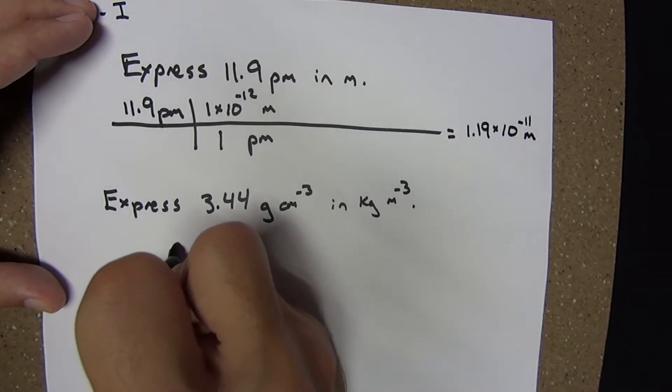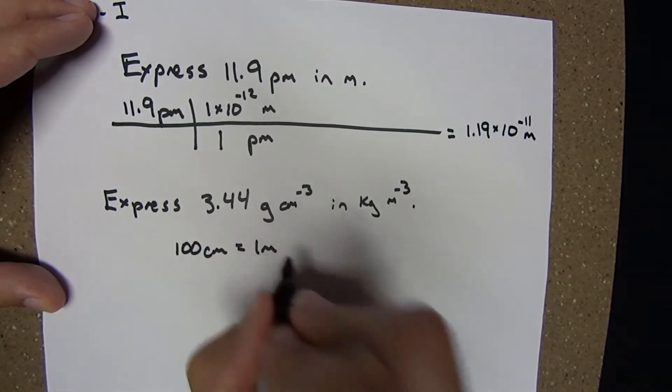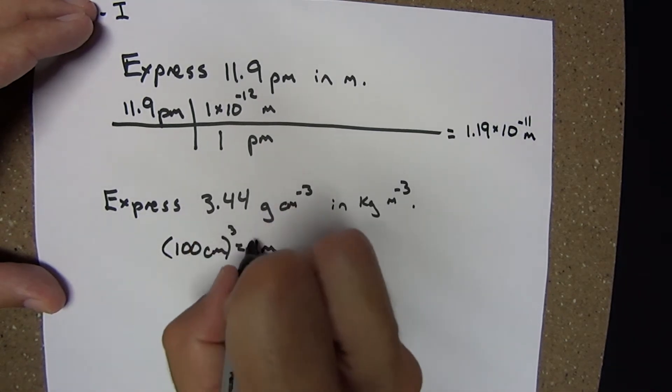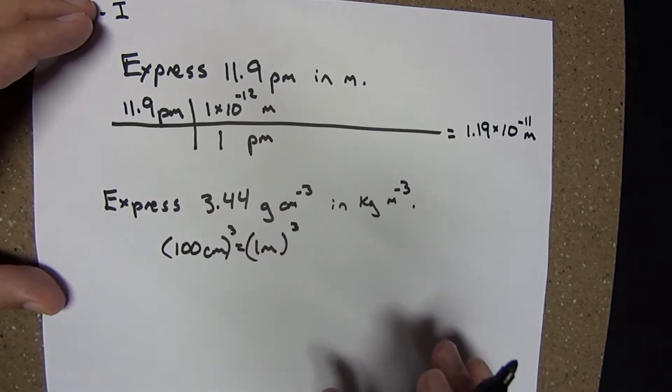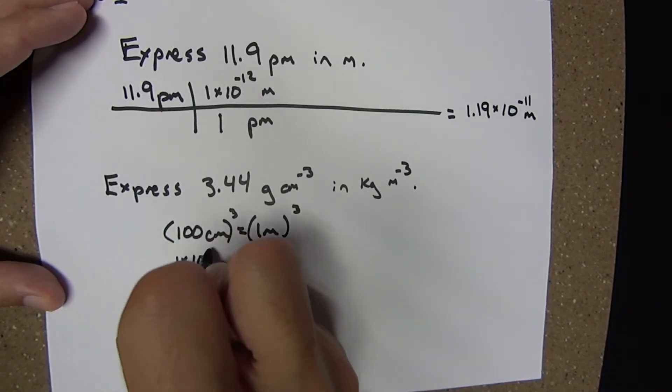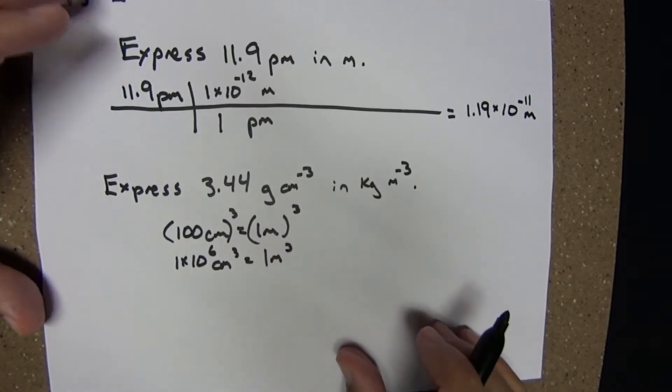We know 100 centimeters equals 1 meter. If we cube both sides, we see that 100^3, which is 1 × 10^6 cubic centimeters, equals 1 cubic meter.